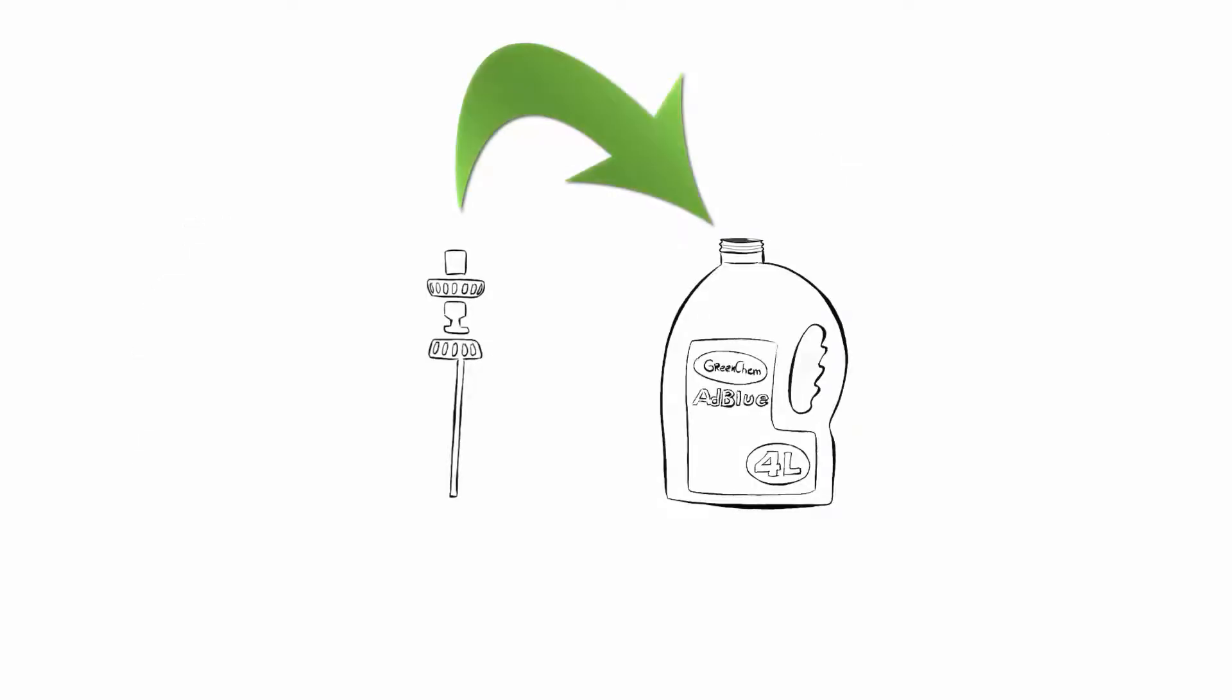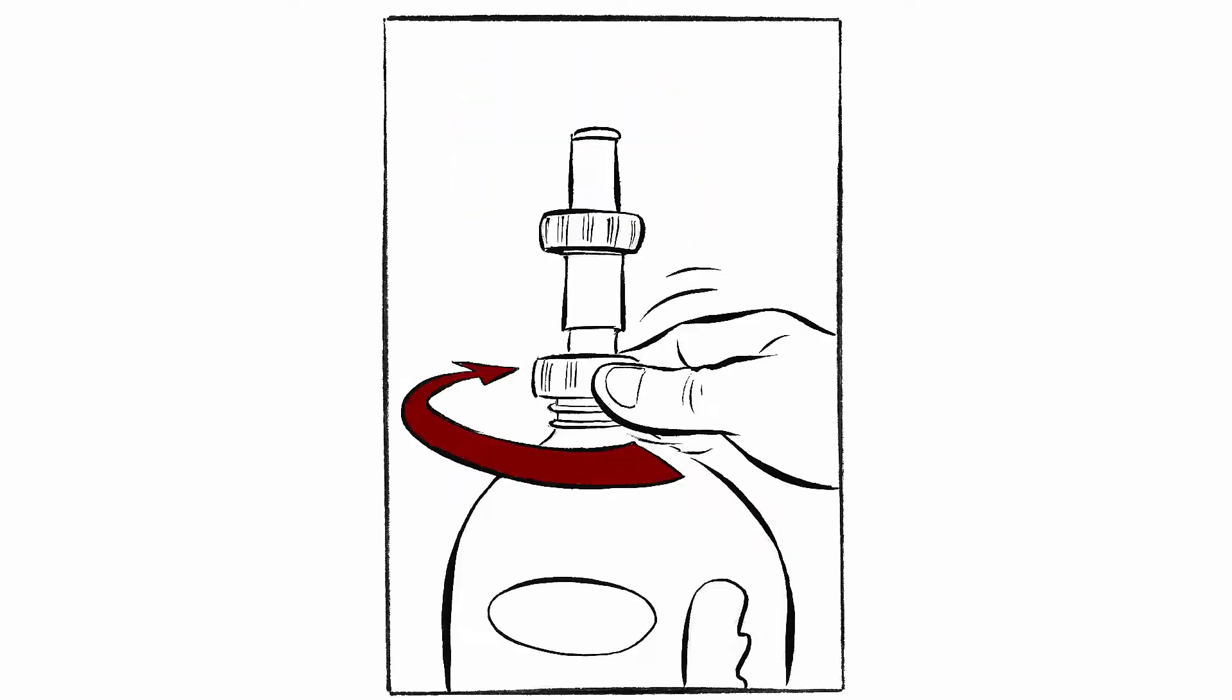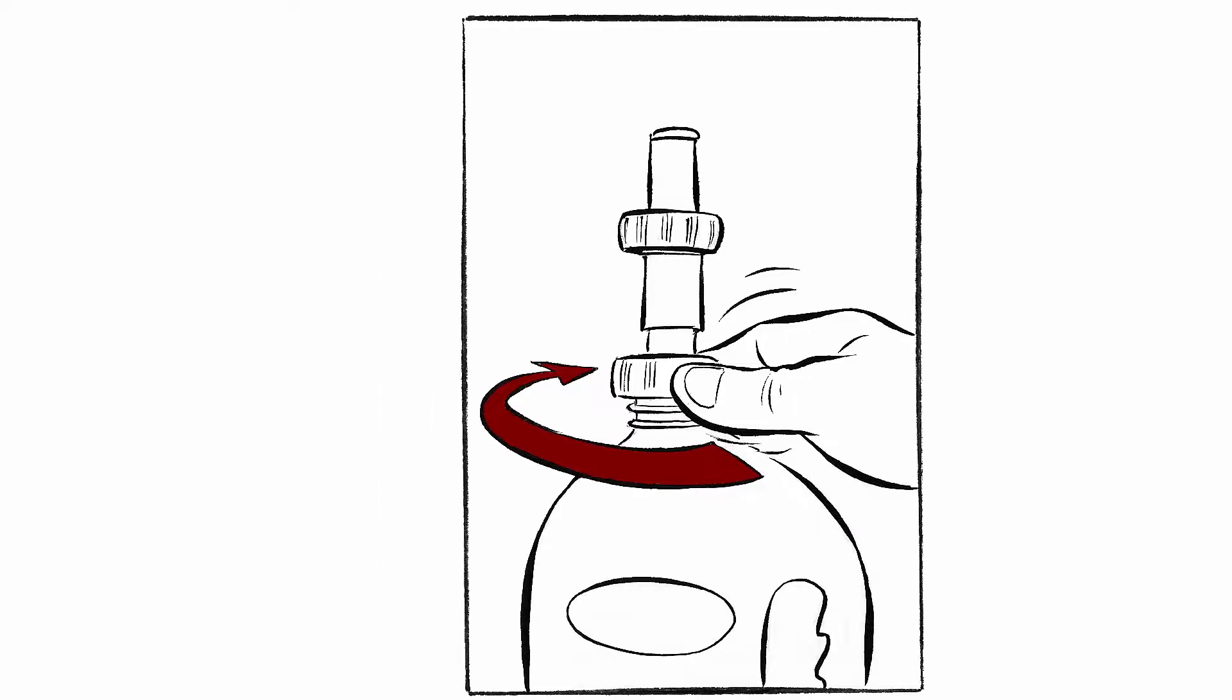Unscrew the cap of the can and mount the dispensing tool onto the can. Check that it is mounted correctly, straight and fixed. Now the bottle and dispensing tool is ready for use.